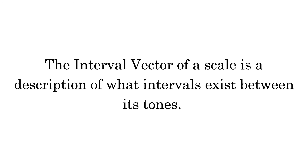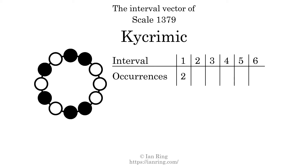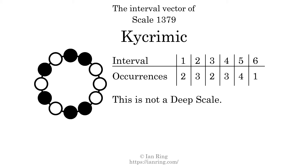The interval vector of a scale is a description of what intervals exist between its tones. There are 2 intervals with the size of 1 semitone. There are 3 intervals with the size of 2 semitones. There are 2 intervals with the size of 3 semitones. There are 3 intervals with the size of 4 semitones. There are 4 intervals with the size of 5 semitones. There is one interval with a size of six semitones. Each interval does not appear in this scale a unique number of times, so this is not a deep scale.